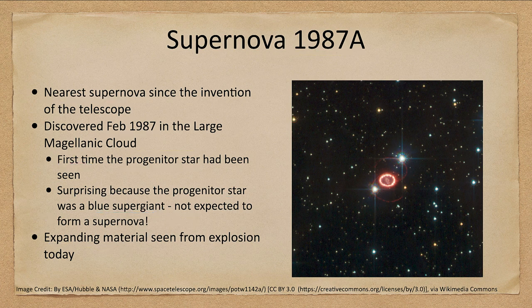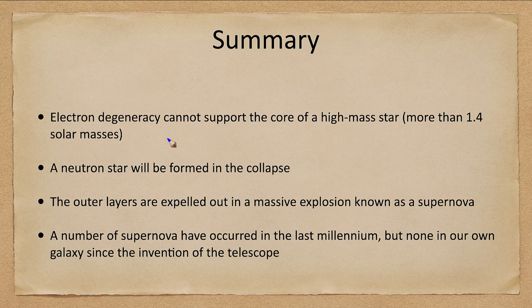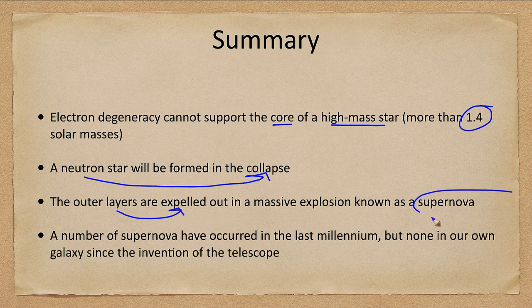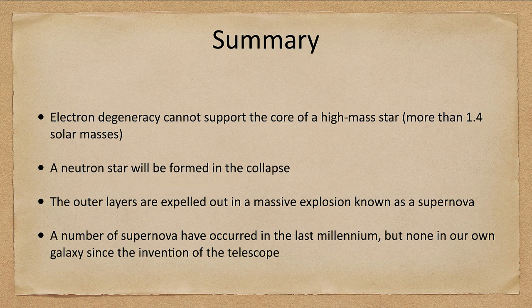To summarize: electron degeneracy cannot support the core of a high mass star that exceeds 1.4 solar masses. A neutron star is formed in the collapse while the outer layers are expelled in the massive explosion we call a supernova. A number of supernovae have occurred in the last millennium, but none in our own galaxy since the invention of the telescope. That concludes this lecture on supernovae — we'll be back next time for another topic in astronomy. Have a great day, everyone.